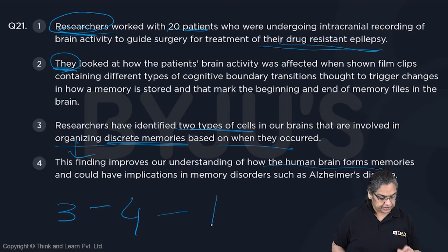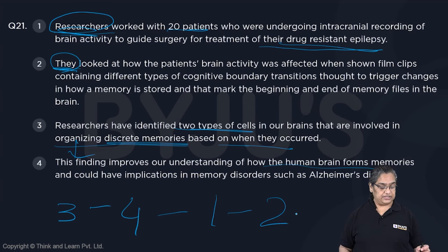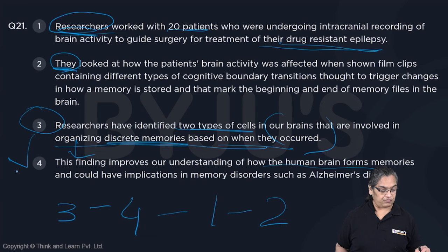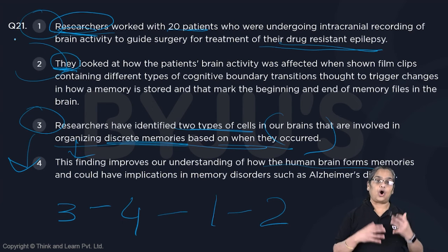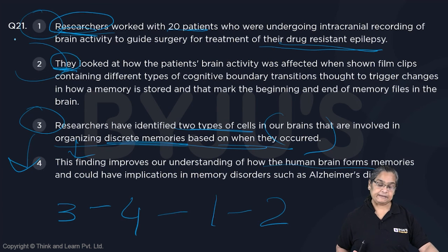They worked with 20 patients and they looked at this — so sentences 3 and 4 start the sequence. 'This finding' in sentence 4 refers back to sentence 3, so 3 and 4 go together first, and then 1 and 2 will talk about the experiment and what happened. So the correct sequence is 3, 4, 1, 2. Easy.